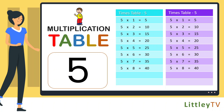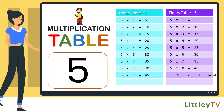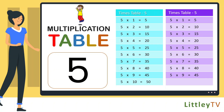5 eights are 40, 5 nines are 45, 5 tens are 50.